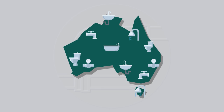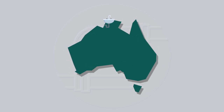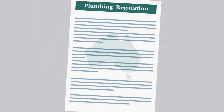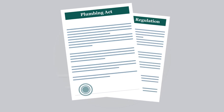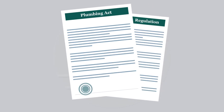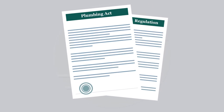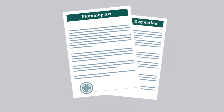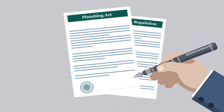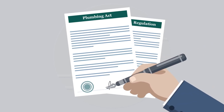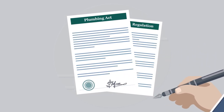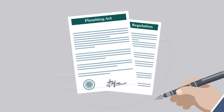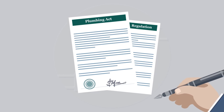The PCA is given legal effect through state and territory plumbing legislation. Each state and territory building or plumbing act and regulations reference the PCA. So, while the ABCB writes the NCC, each state and territory is responsible for its administration.